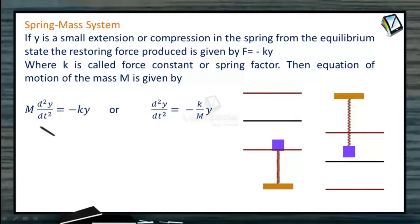As we know that force applied by the spring is KY. If Y is the extension then force applied by the spring is KY. Mass into acceleration is minus KY, so d²y/dt² equals minus K by M into Y.